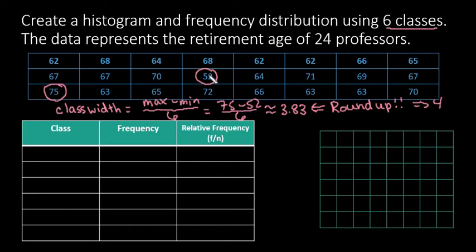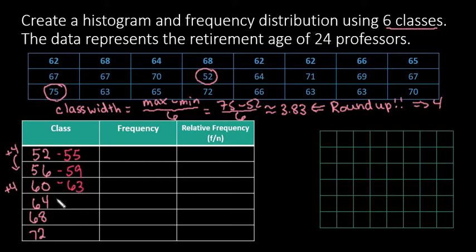Now we'll start with our smallest value of 52 and add 4 each time. My next class starts at 56, then 60, 64, 68, and 72. That gives me my lower class limits. To get the upper class limit, I go one less than the next class. So 52 to 55, 56 to 59, then 63, 67, 71, and for the last class, add 4 again to end at 75.